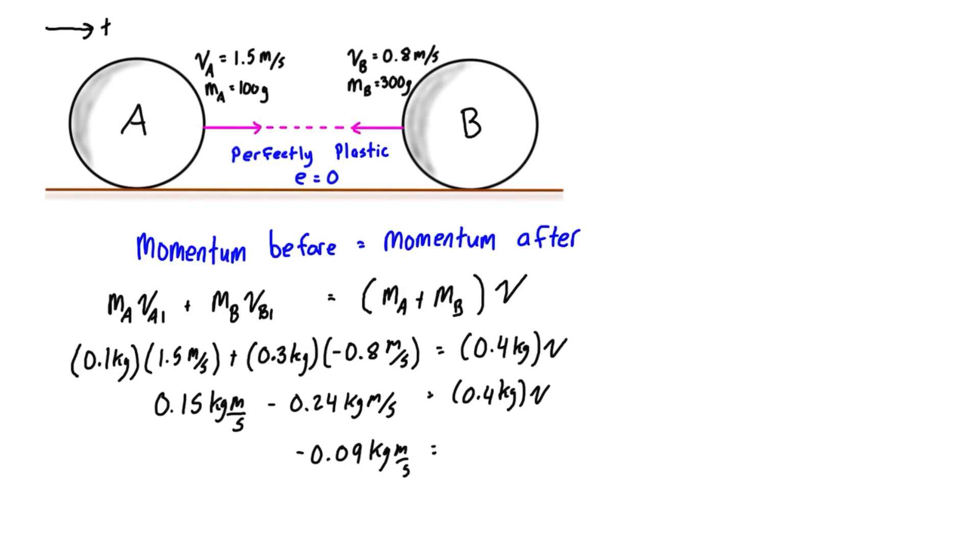Before we go any further, it's important to mention that kilogram meters per second is the units of impulse and momentum. What we found here on the left-hand side is the actual momentum of the system: 0.09 kilogram meters per second to the left. That's what that negative sign indicates.